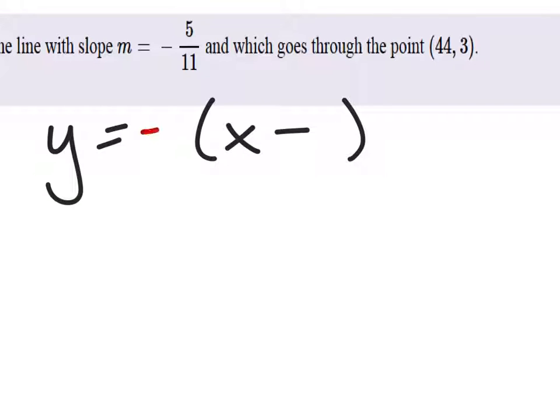It gave us the slope, negative 5 elevenths, and the point, 44, and it's a positive 3 for our y.